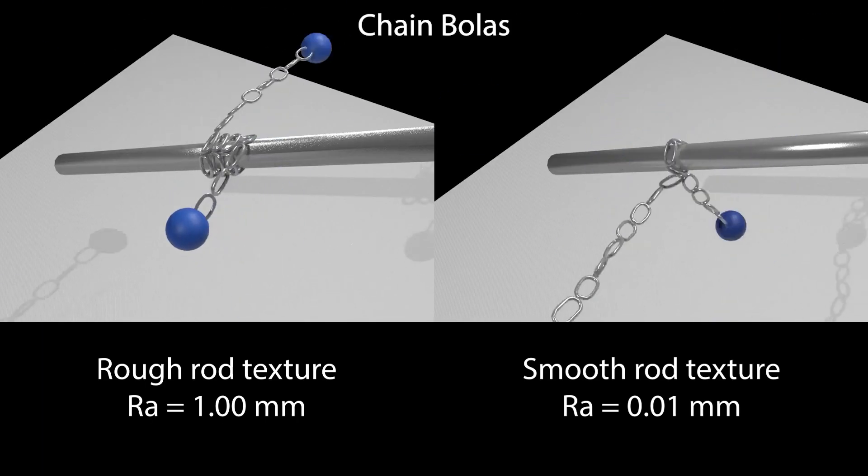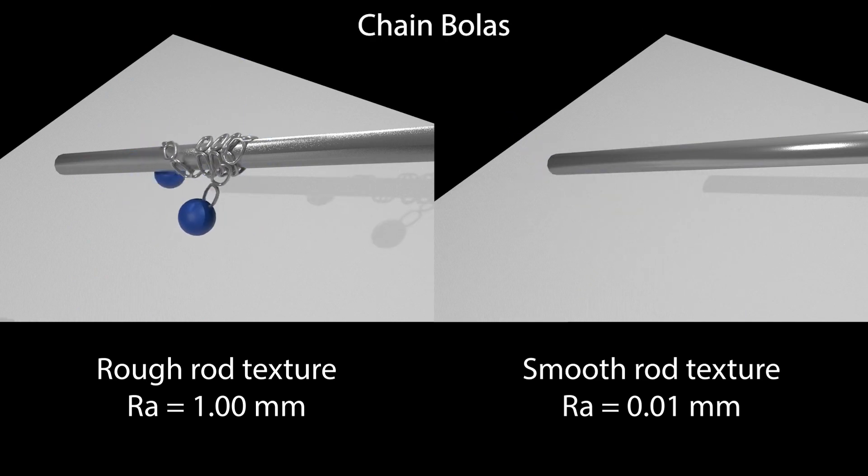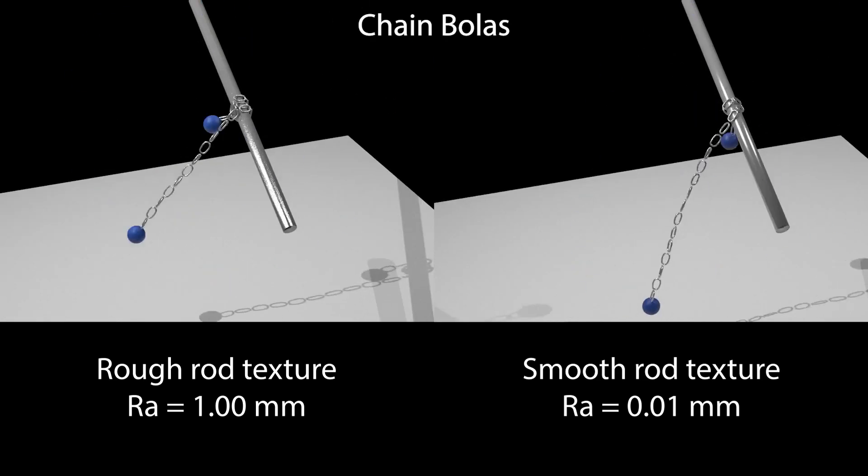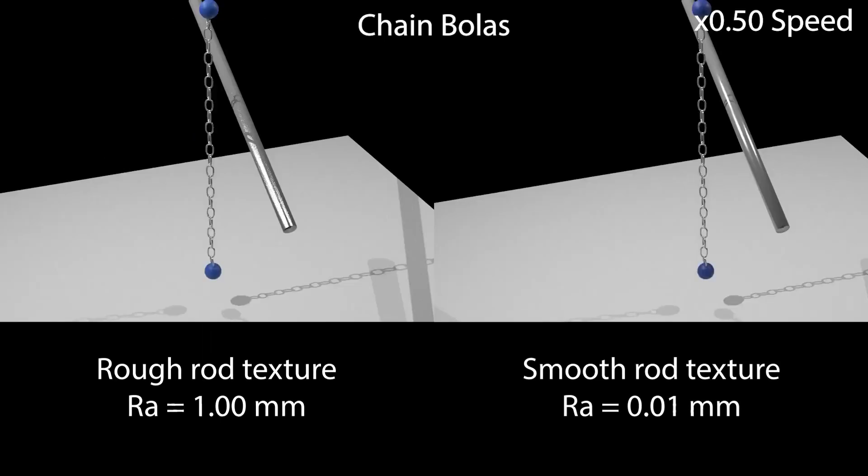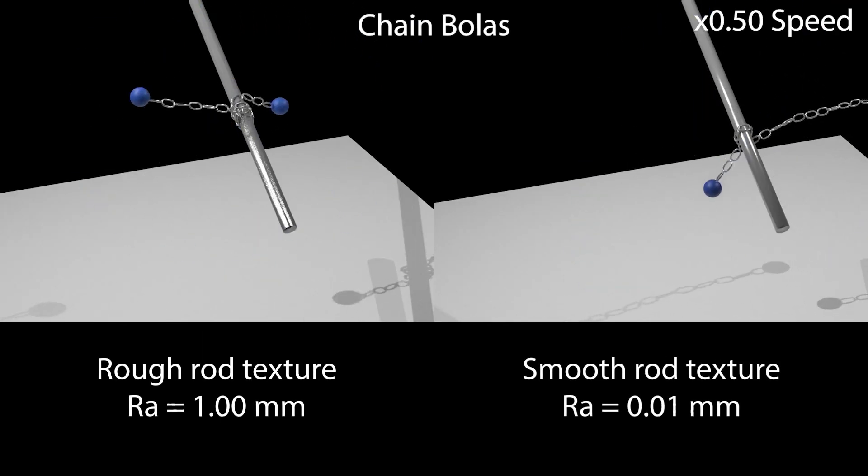A similar behavior is observed for chained bolas thrown around a metal rod. In the case of the smooth rod, the bolas slides off, whereas for the rough rod, the tension in the chain causes it to stick.